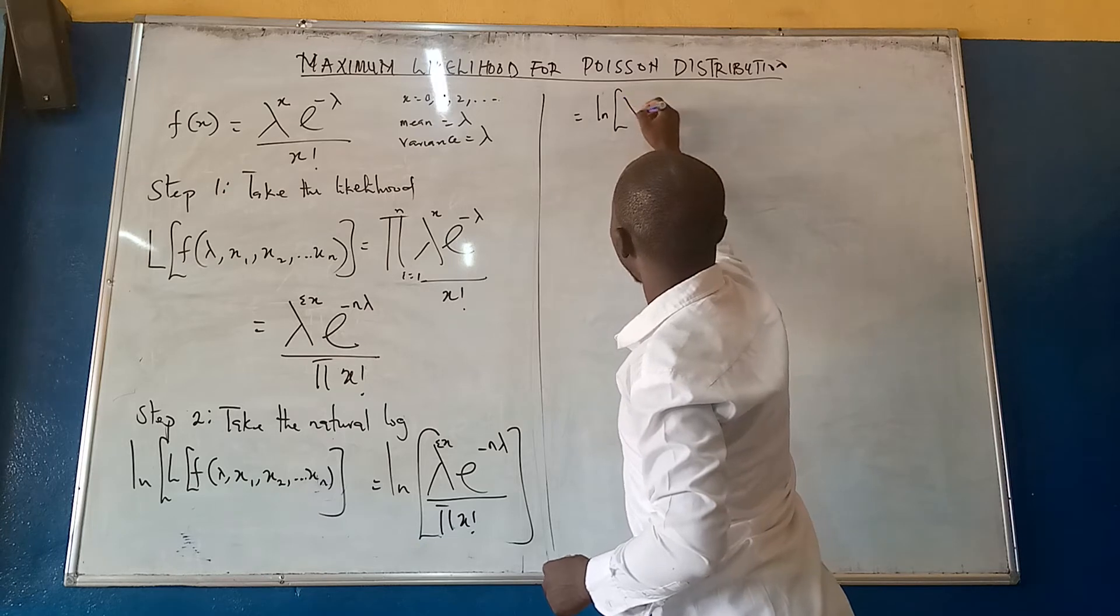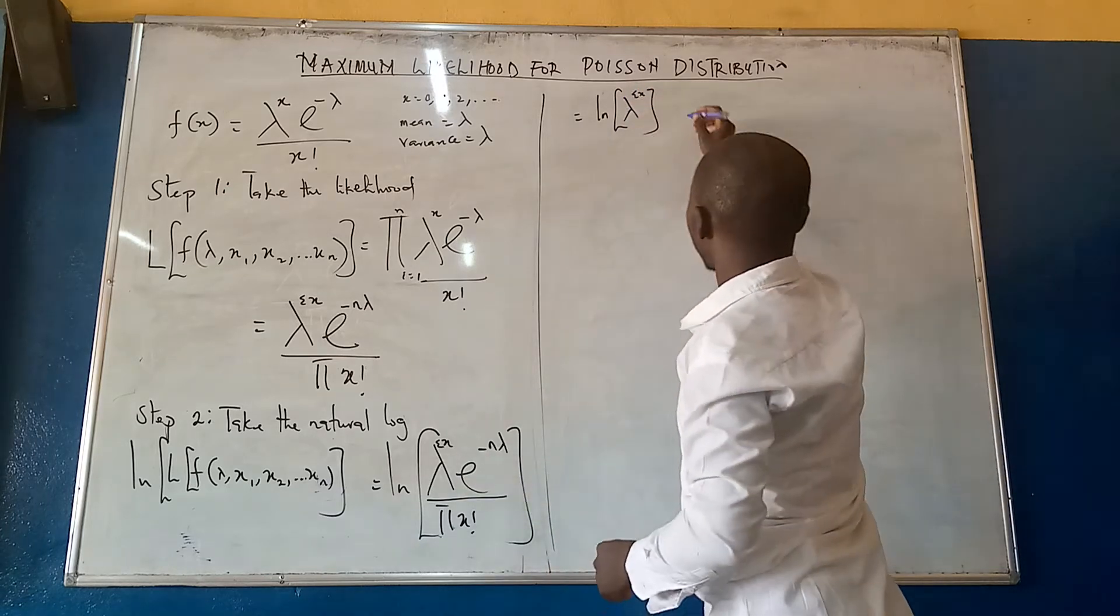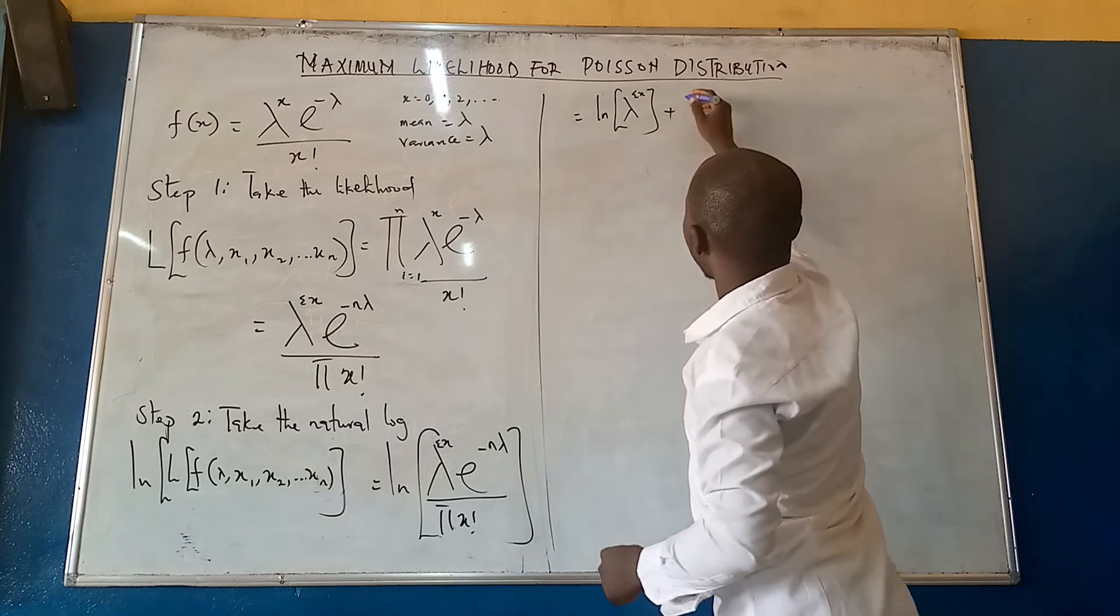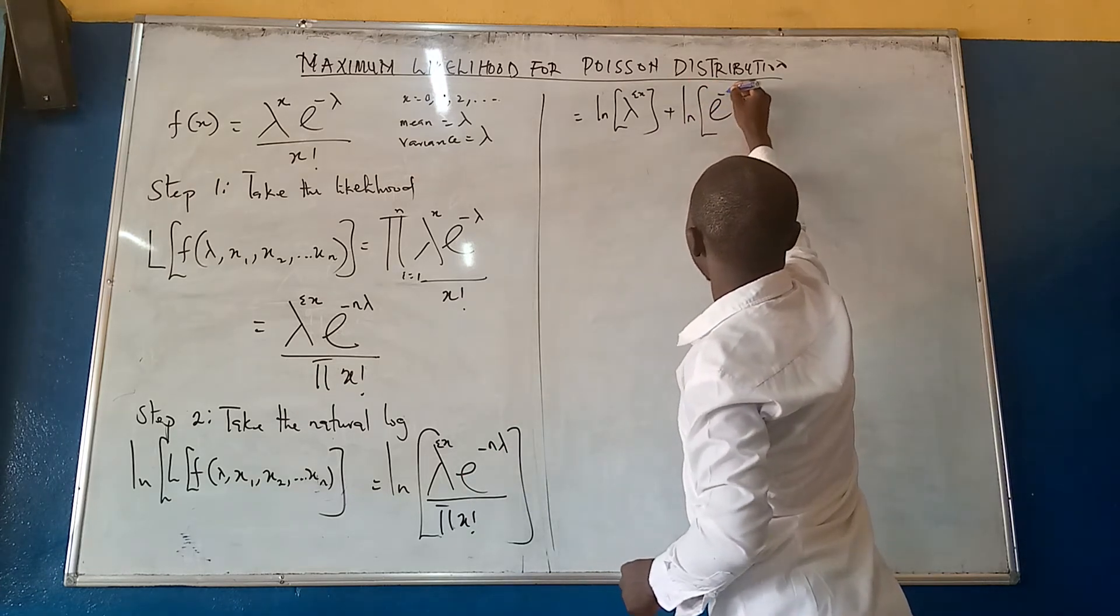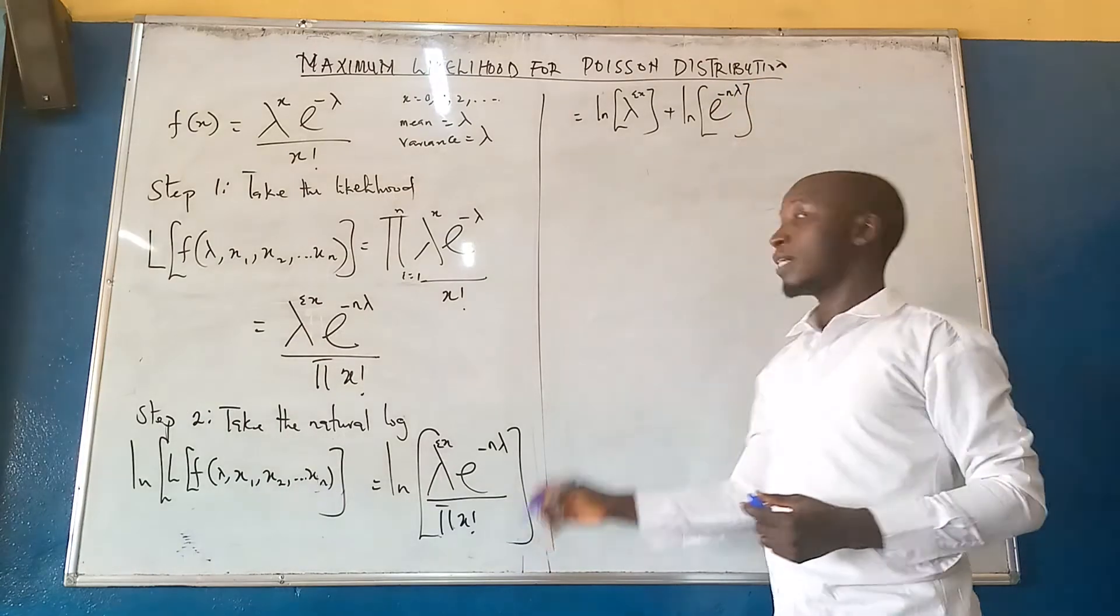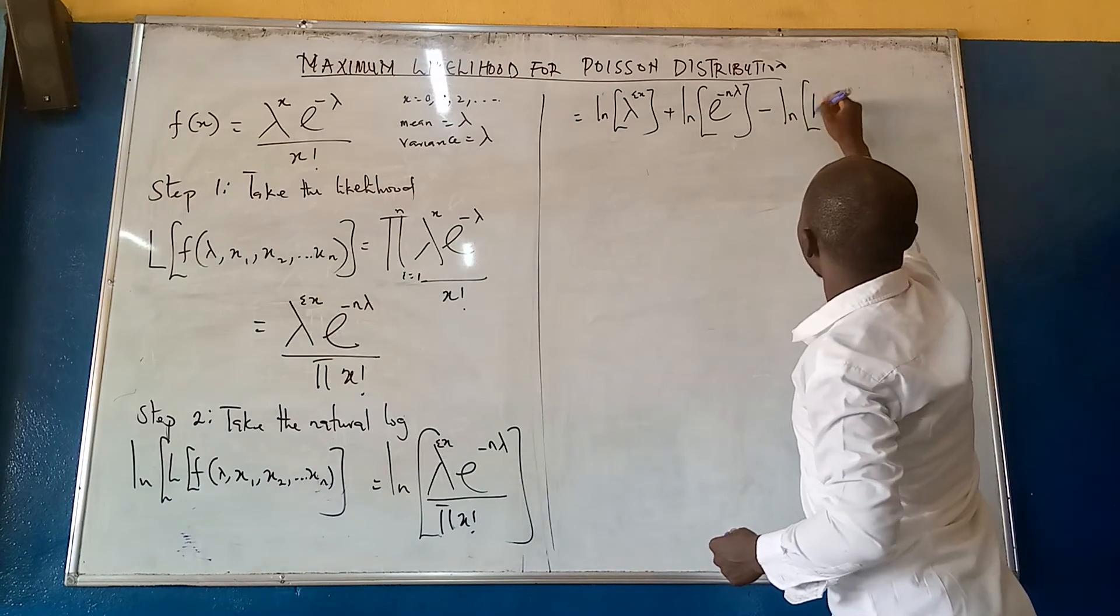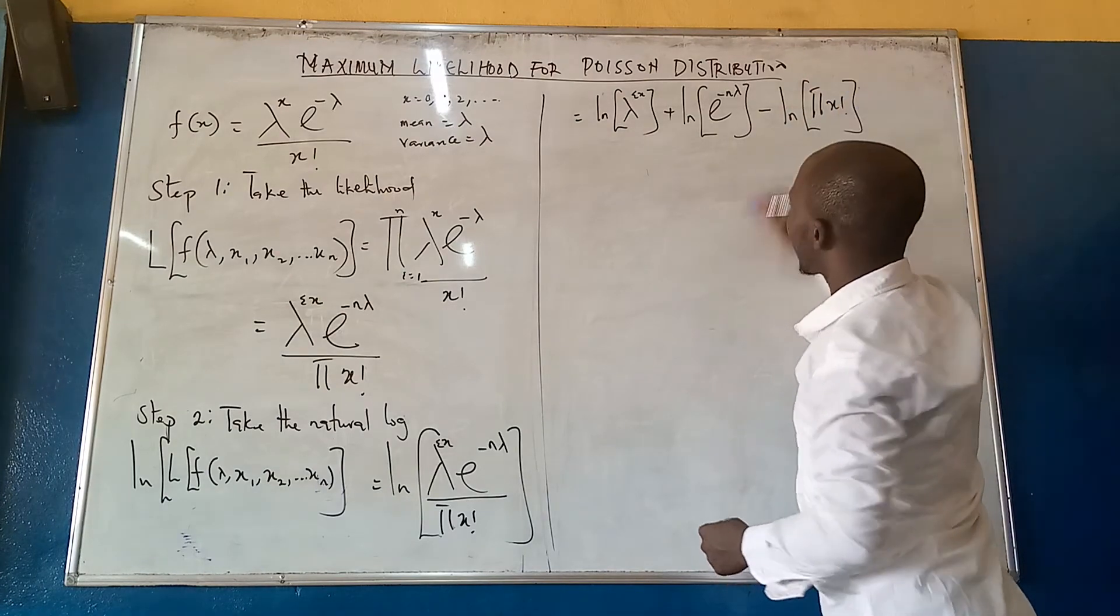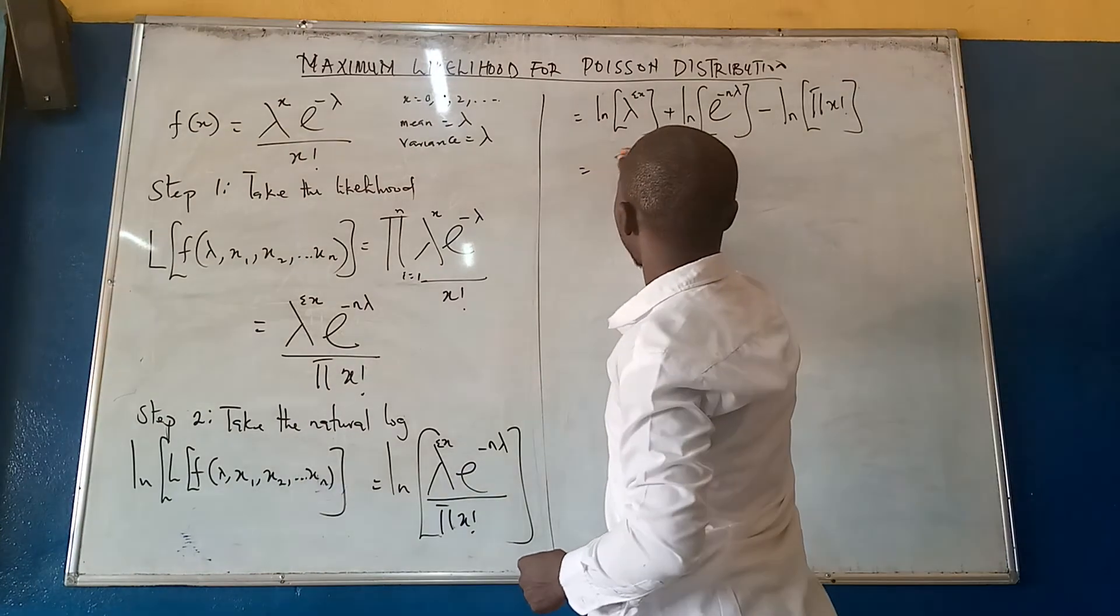So we have this, which is equal to ln lambda summation x, plus ln exponential minus n lambda, now this is going to be minus ln of x factorial.